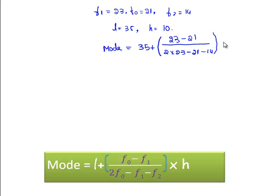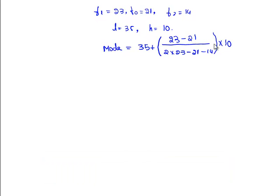By solving this, we get 35 plus 1.8 approximately, which gives us 36.8 approximately.